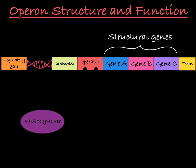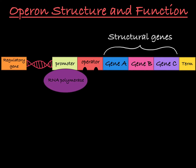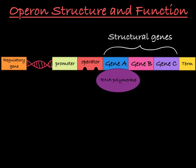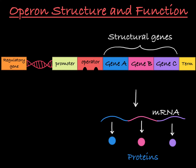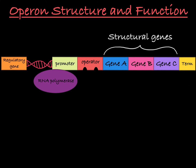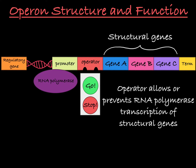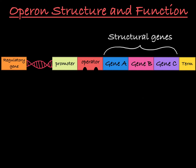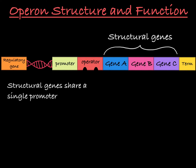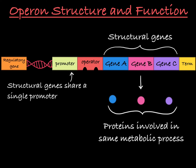The promoter of the operon is where RNA polymerase will bind to initiate transcription of the genes that follow. You can think of this operator as the stoplight for RNA polymerase, either allowing or preventing RNA polymerase from transcribing all of the structural genes. All of these structural genes are linked to the same promoter because they encode proteins involved in the same metabolic process.